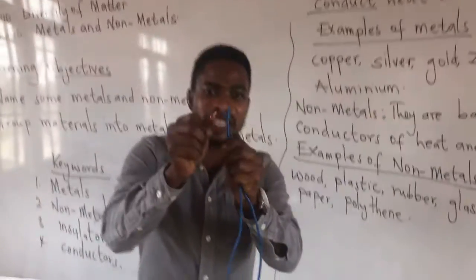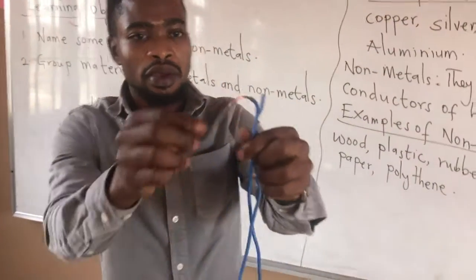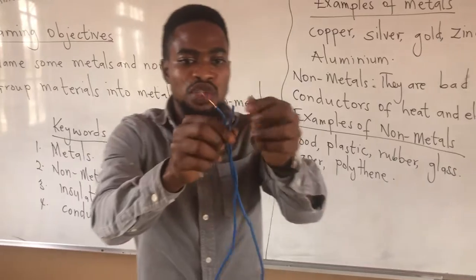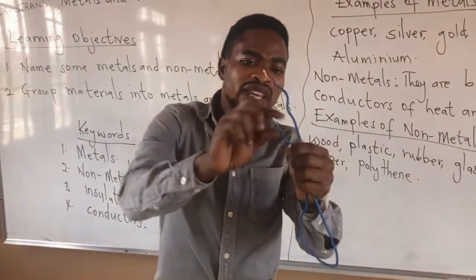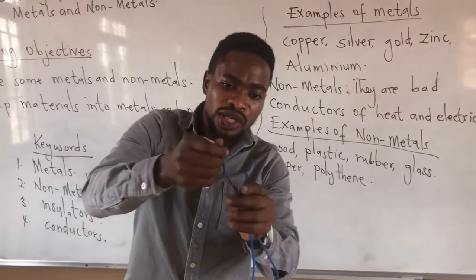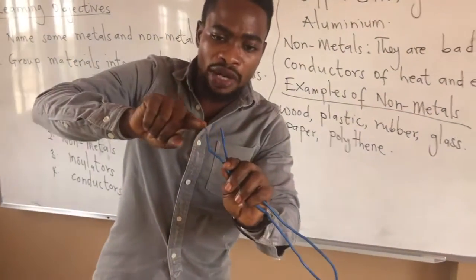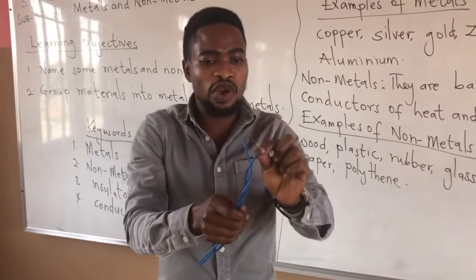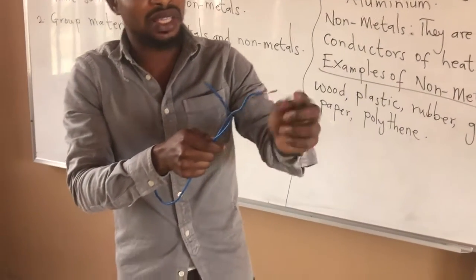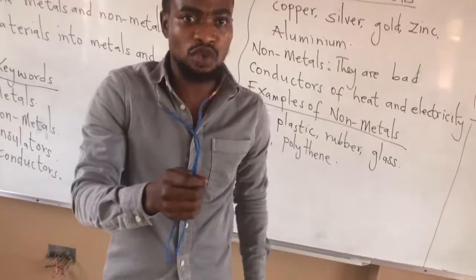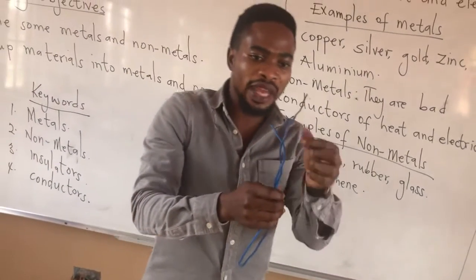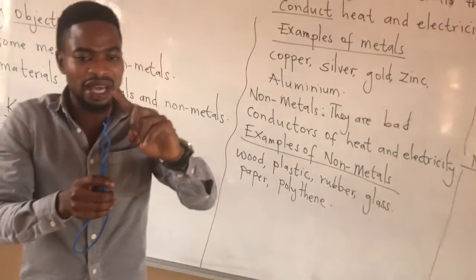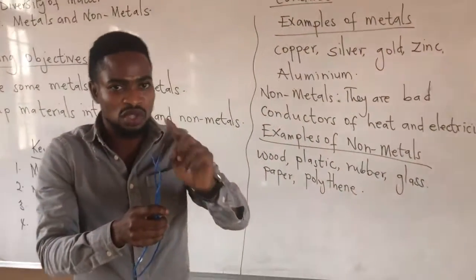Looking at this, this is copper wire drawn in an insulator. This material which covers the metal or copper prevents it from shocking us when we use it for electricity. So the insulator prevents the metal from shocking us when it is connected to electricity.